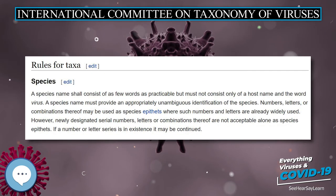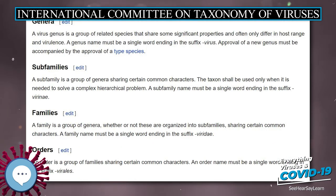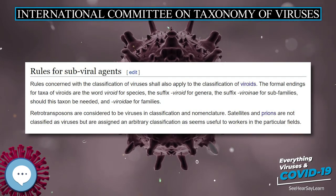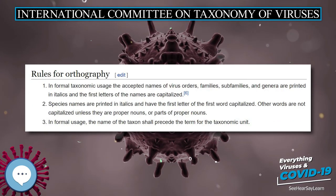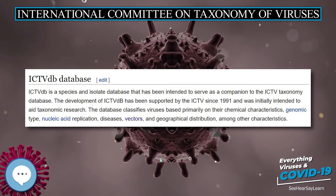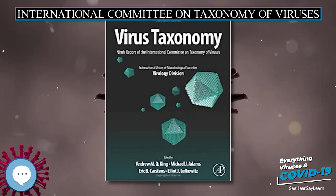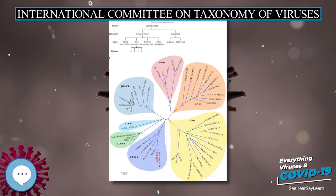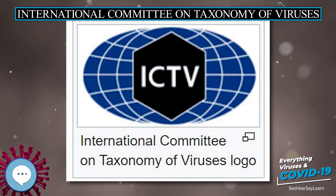ICTV database. The ICTV database is a species and isolate database intended to serve as a companion to the ICTV taxonomy database. Its development has been supported by the ICTV since 1991 and was initially intended to aid taxonomic research. The database classifies viruses based primarily on their chemical characteristics, genomic type, nucleic acid replication, diseases, vectors, and geographical distribution, among other characteristics. The database was developed at the Australian National University with support of the U.S. National Science Foundation and sponsored by the American Type Culture Collection.